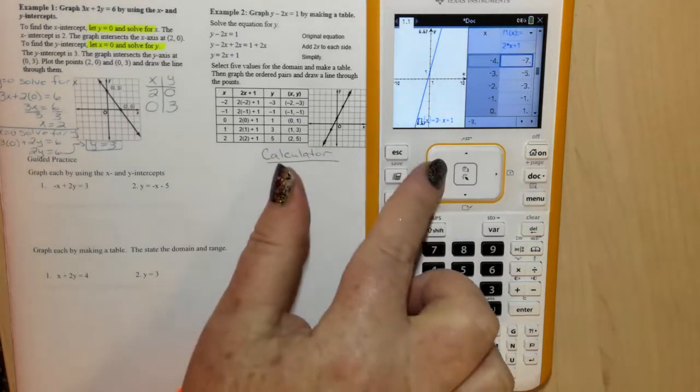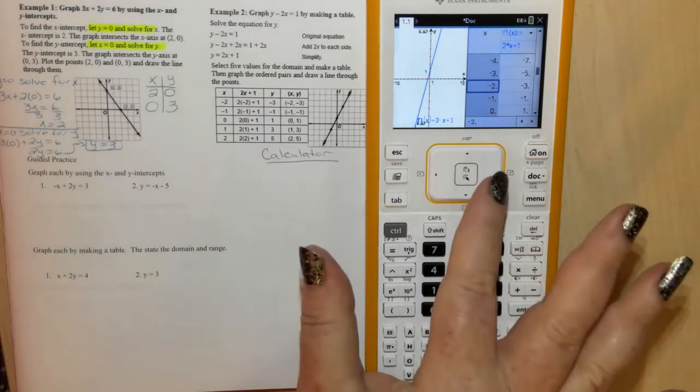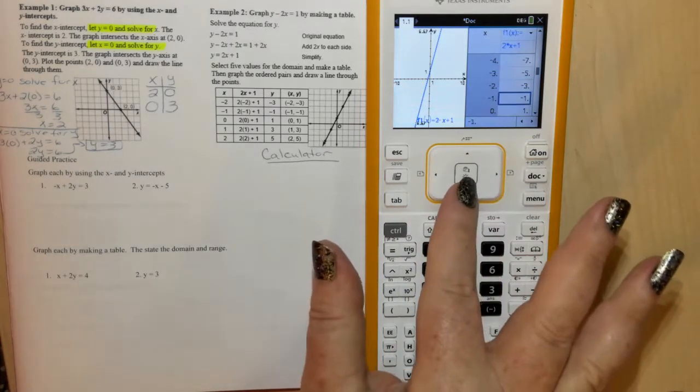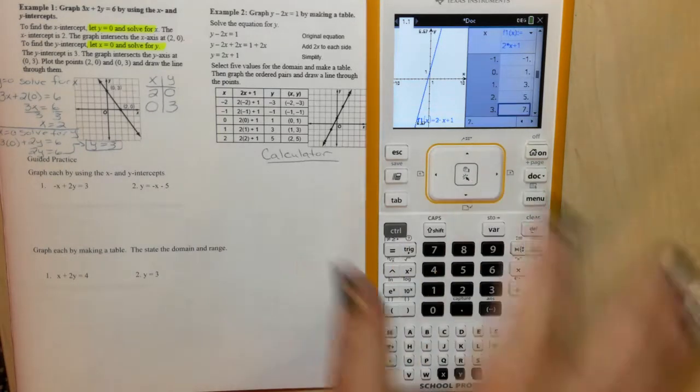Negative 4. When x is negative 4, y is negative 7. When x is negative 2, y is negative 3. When x is 3, y is 7.